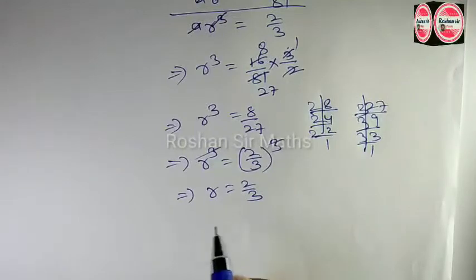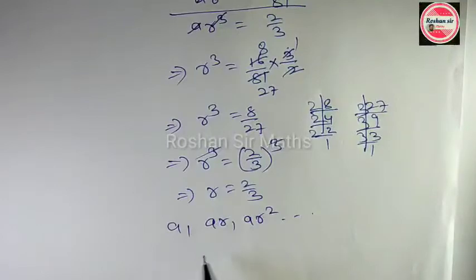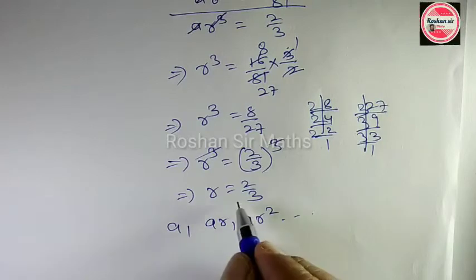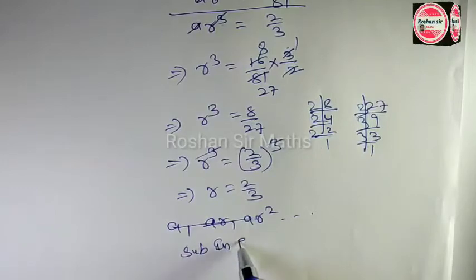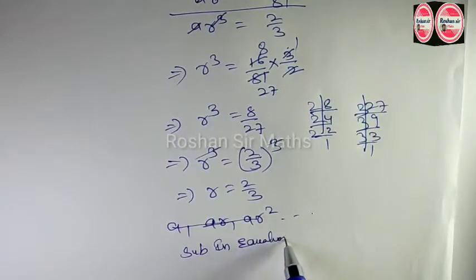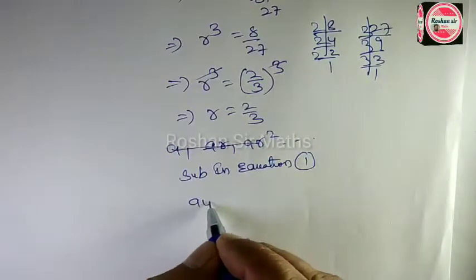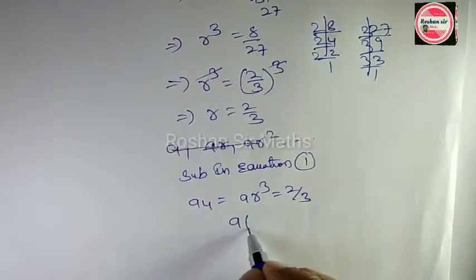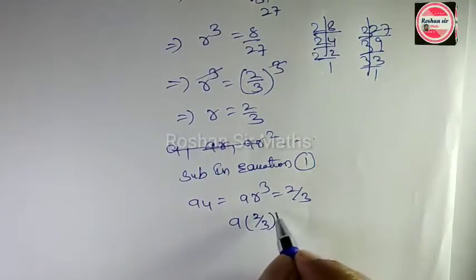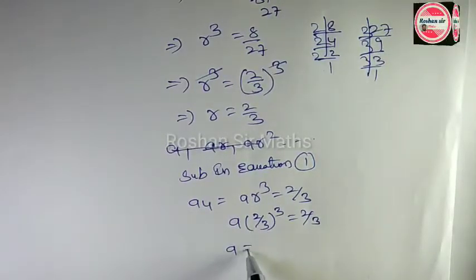तो यहाँ पर GP की series मालूम करनी है: A, AR, AR power of 2. A मालूम करने के लिए substituting in equation 1 करेंगे. Equation 1 क्या है — A4 = AR power of 3 = 2 by 3. R की जगह 2 by 3 रखेंगे: A × (2 by 3) power of 3 is equal to 2 by 3.